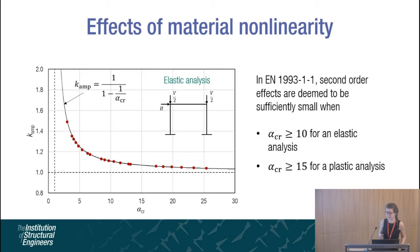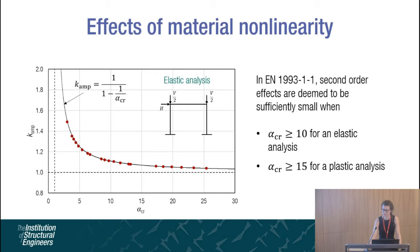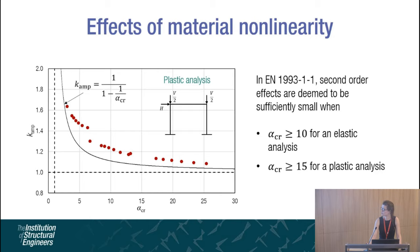To assess these limits, this figure shows results from elastic FE analyses comparing the relationship between bending moments from first- and second-order elastic FE analyses. Frames with high values of alpha-critical have negligible second-order effects and the bending moments from first- and second-order analyses are almost equal. As alpha-critical reduces, second-order effects become increasingly significant, with around a 10% difference at alpha-critical equal to 10, tending to infinity as alpha-critical approaches unity.